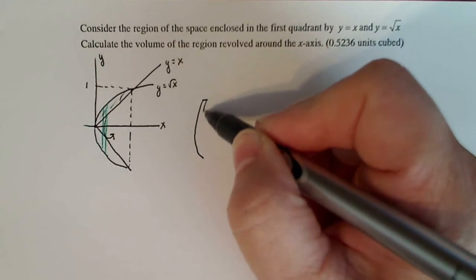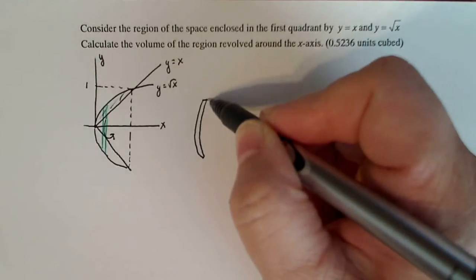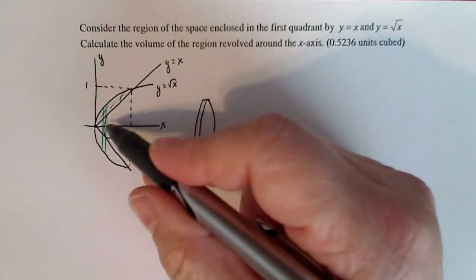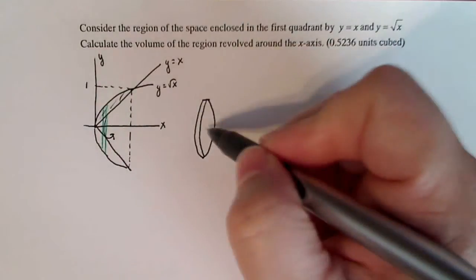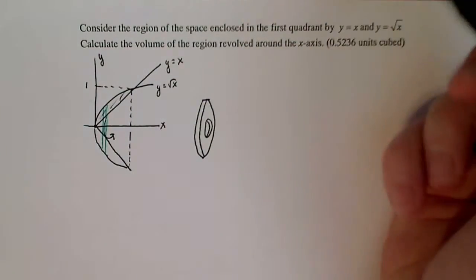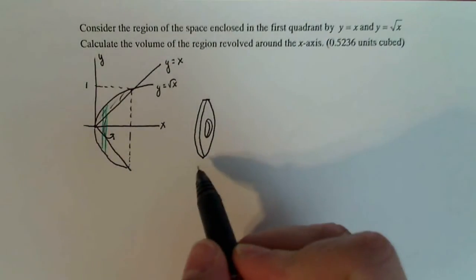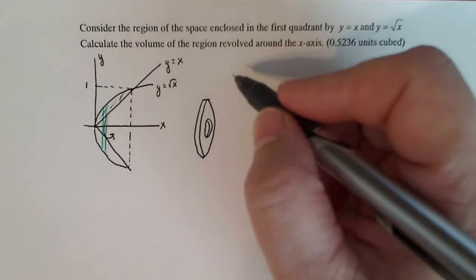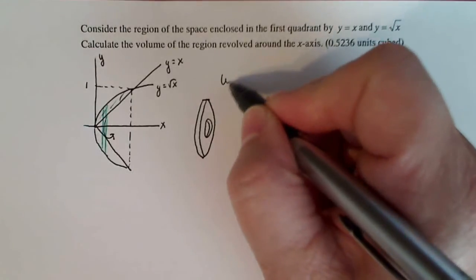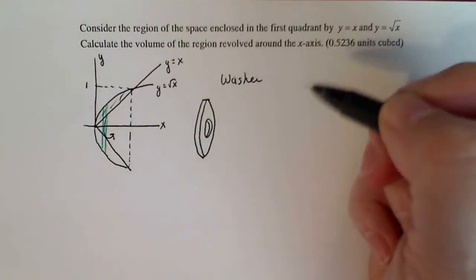I know that my slice will have an outer edge that looks like a coin. However, this part here is open, so there will be a small opening in the center, like that. So if I think about the volume of my slice, this looks like a washer — like something you would use in plumbing. That's a washer.